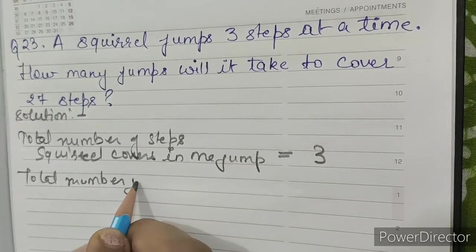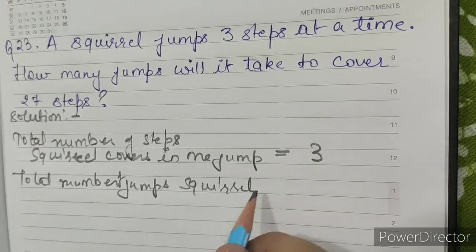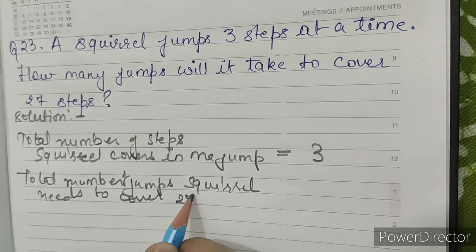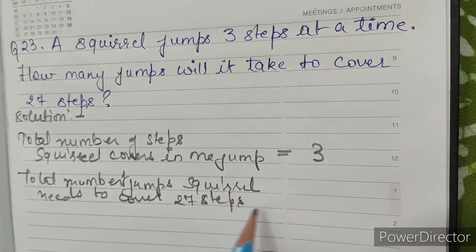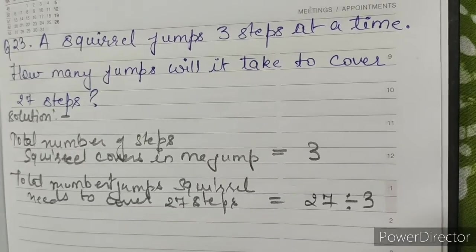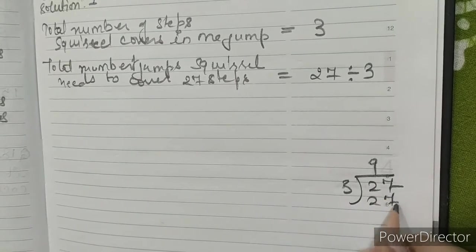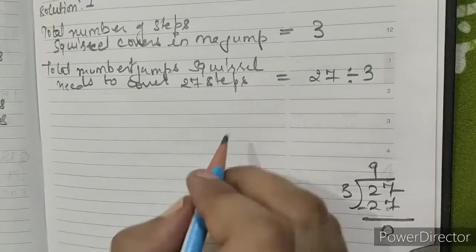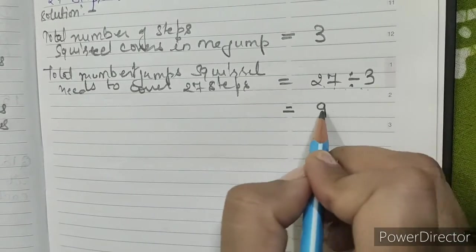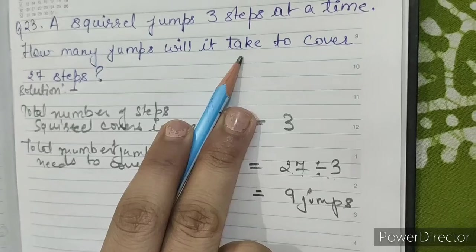Total number of jumps squirrel needs to cover 27 steps equals 27 divided by 3. 3 nines are 27, remainder 0.